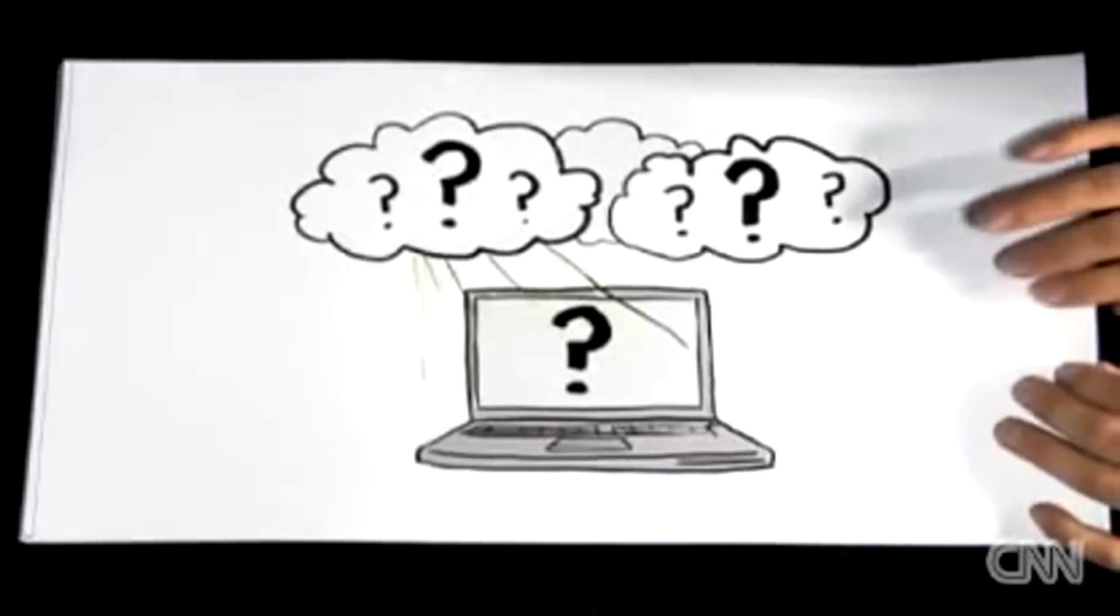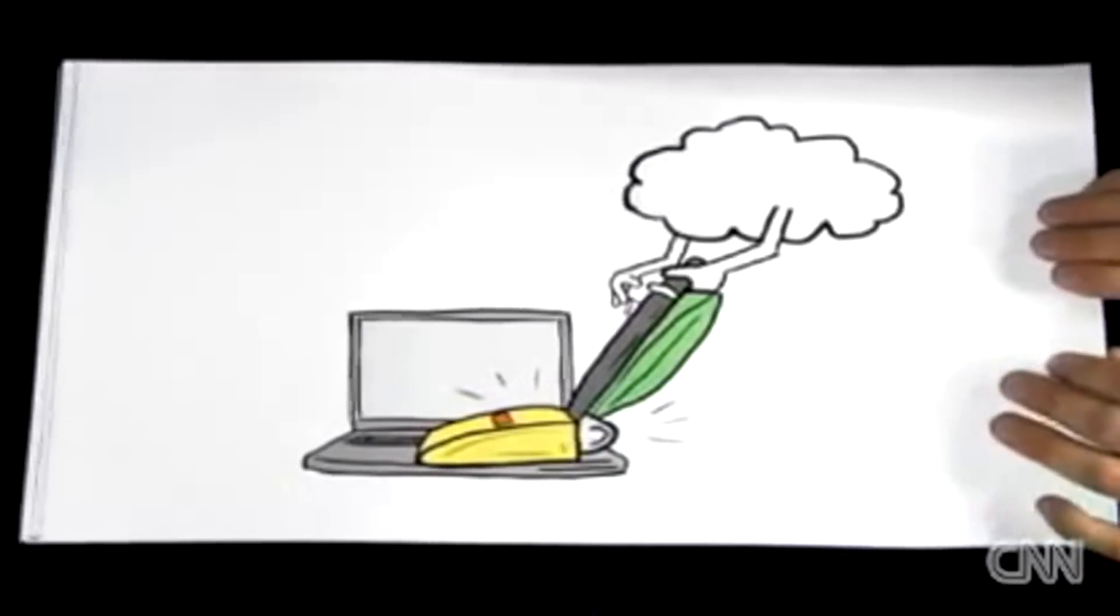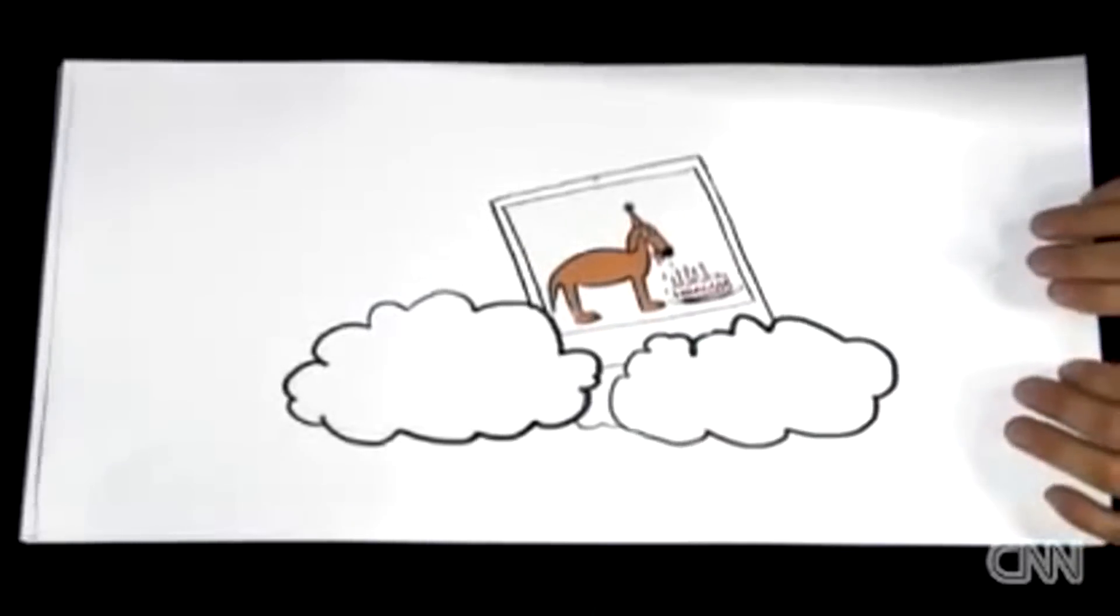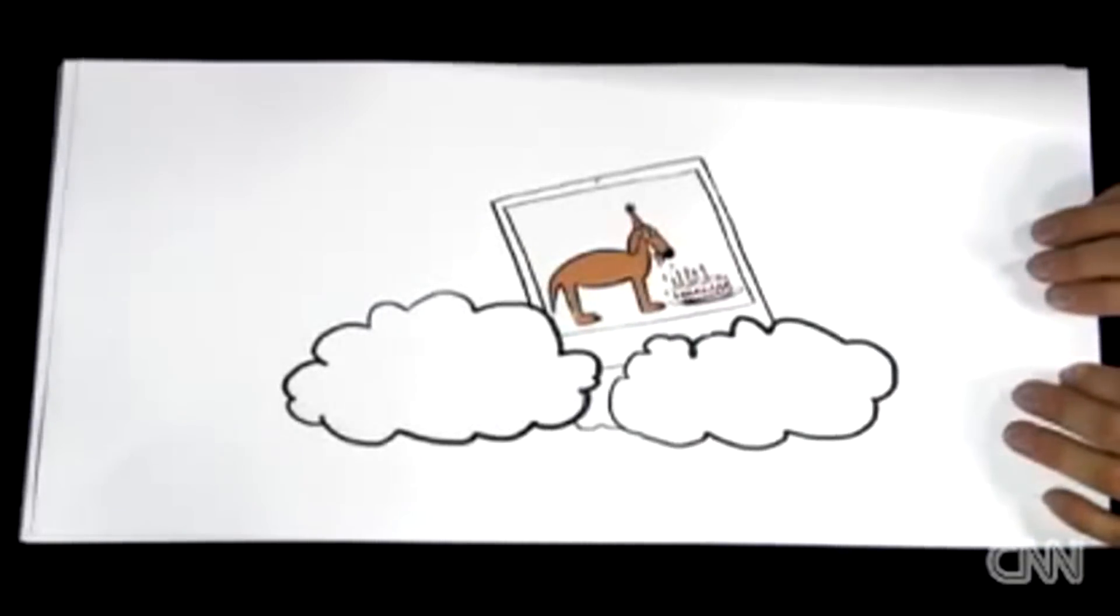But what does that mean? When you put Frank's photo online, you can picture a giant cloud coming down to vacuum up this photo off your laptop. Then the photo of Frank, birthday hat and all, lives up in the cloud until you need to look at it again.